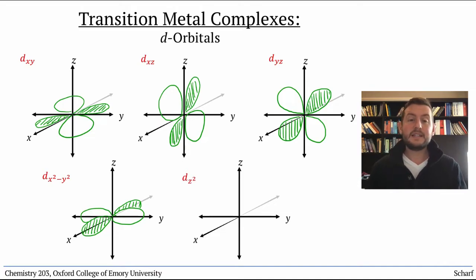The dz² orbital is the weird one. It has two lobes that point directly along the z-axis and a torus shaped like a donut that wraps around its center in the xy plane.